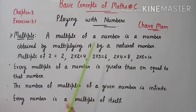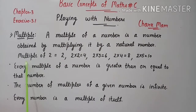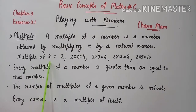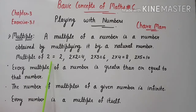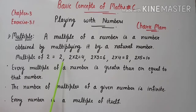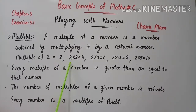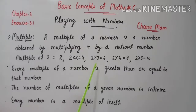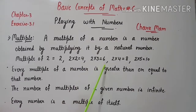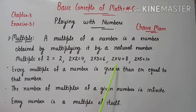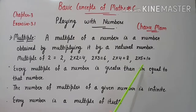A multiple is a natural number. For example, multiples of 2: 2 multiplied by 1 is 2, 2 multiplied by 2 is 4, 2 multiplied by 3 is 6, 2 multiplied by 4 is 8, 2 multiplied by 5 is 10.